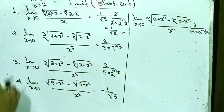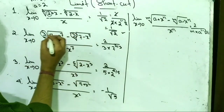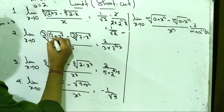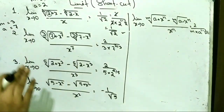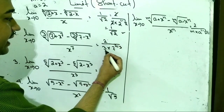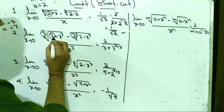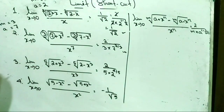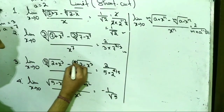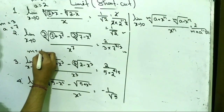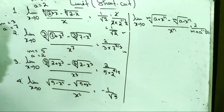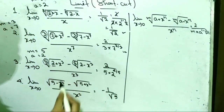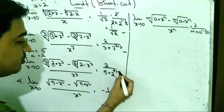In the second problem, m equals 3 and a equals 7. Putting into the formula: 2 by 3 into 7 to the power (1 minus 1 by 3), that is 2 by 3 into 7 to the power 2 by 3.